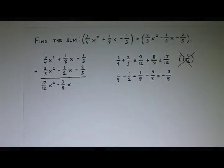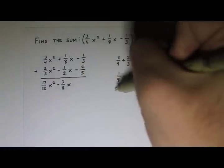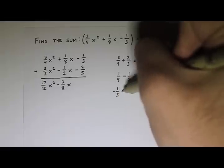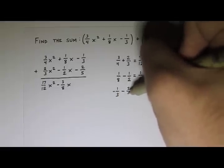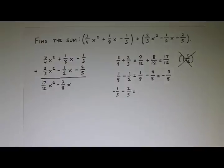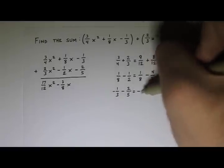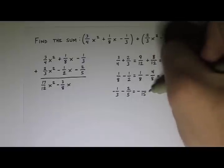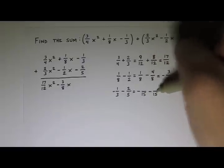Last one. -1/3 - 2/5. Let's see, common denominator between 3 and 5 is 15. So we're going to have something with a 15. 3 times 5 is 15, 1 times 5 is 5.